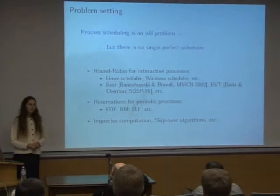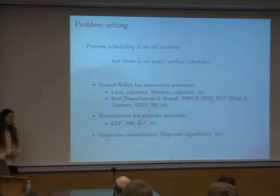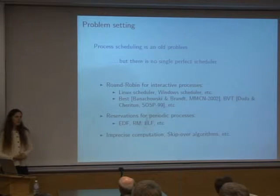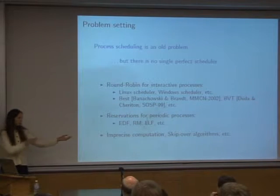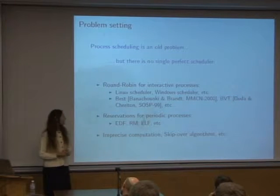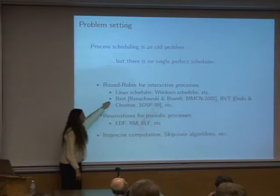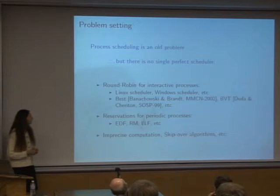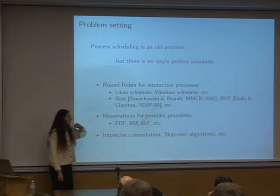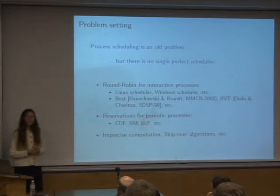The problem setting we're considering is process scheduling. Process scheduling is an old problem, but there's no single perfect process scheduling algorithm. You're probably familiar with some algorithms from an operating systems course. We have round robin and variants of round robin scheduling for interactive processes. You have a set of processes, you go round to each of them, you give them each a little bit of time and give them the illusion of having one nth of the CPU.